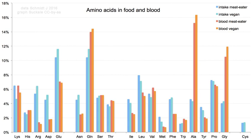Proline is the only proteinogenic amino acid whose side group links to the alpha amino group and thus is also the only proteinogenic amino acid containing a secondary amine at this position. In chemical terms, proline is therefore an imino acid, since it lacks a primary amino group, although it is still classed as an amino acid in the current biochemical nomenclature, and may also be called an N-alkylated alpha amino acid.